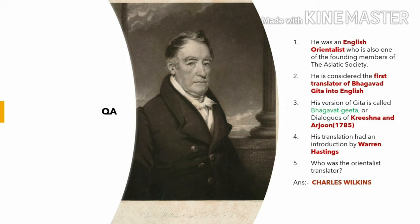Here is the first question. Who is this man? He was an English orientalist who is also one of the founding members of the Asiatic Society. He is considered the first translator of Bhagavad Gita into English. His version of the Gita is called Bhagavad Gita or Dialogues of Krishna and Arjuna. It was published in 1785. In its preface, he argued that the Gita was written to encourage a form of monotheist utilitarianism and to draw Hinduism away from polytheism, which he ascribed to the Vedas. His translation had an introduction by the Governor General, Lord Warren Hastings. The answer is Charles Wilkins.